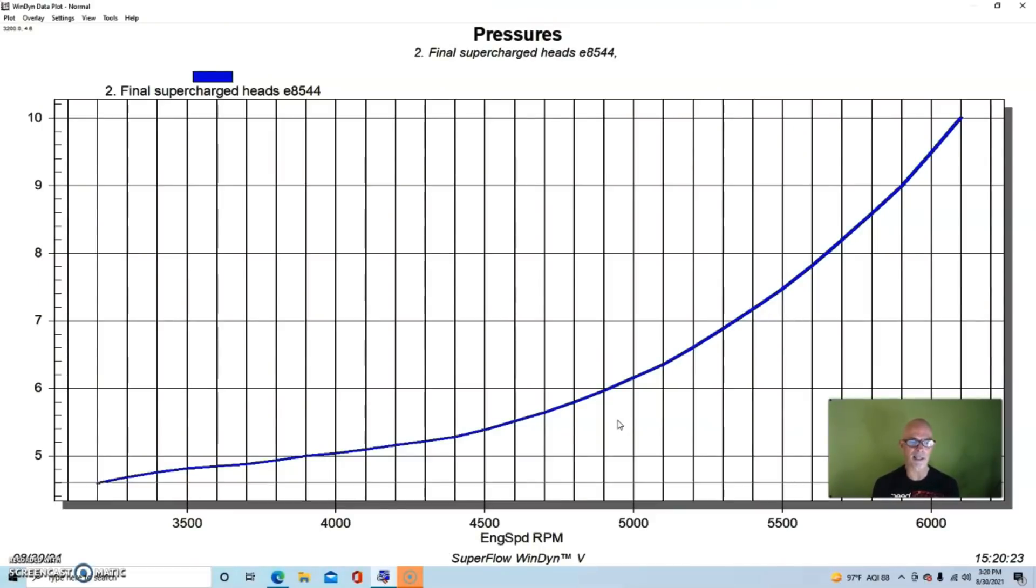It doesn't surprise me that we have a rising boost curve toward the end of this, which we often see on positive displacement blower applications, especially ones with stock camshafts that don't really work very well at higher RPM. So the motor becomes less efficient and we see that as a rise in boost pressure on these combinations. What did surprise me is how low the boost pressure was at the beginning of the run. I thought it would be a little bit higher.